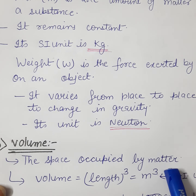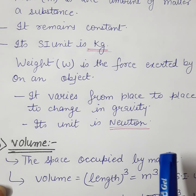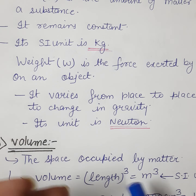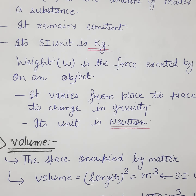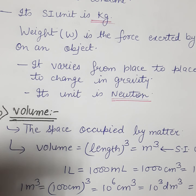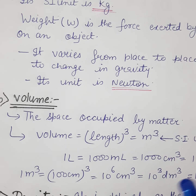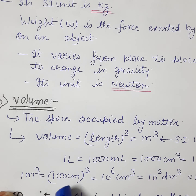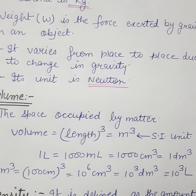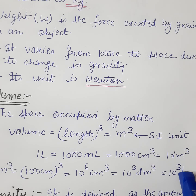The space occupied by matter is known as volume. We discussed this in derived units. The SI unit of volume is meter cube. Important conversions: 1 liter equals 1000 mL, which equals 1000 cm³, which equals 1 dm³. So 1 dm³ = 1000 cm³ = 1 liter. Also, 1 m³ equals 10⁶ cm³, which equals 10³ dm³, which equals 10³ liters.